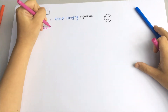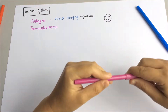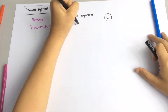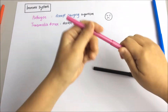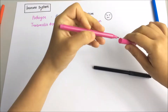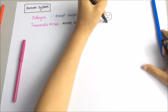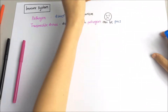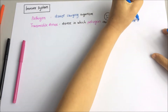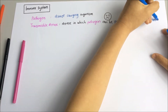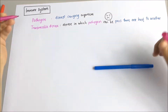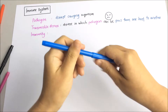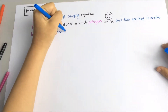The next term that you have to know is transmissible disease. It means a disease in which a pathogen can pass from one host to another. For example, dengue, because the dengue virus can be passed on from one host to another.